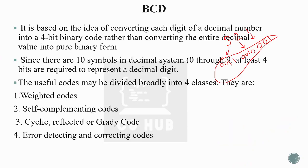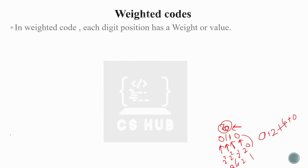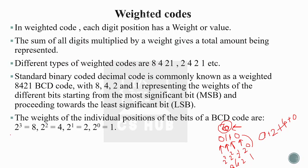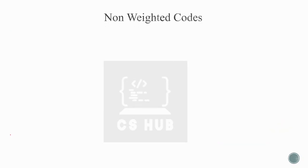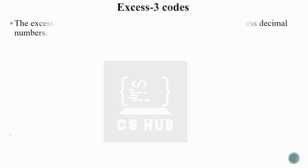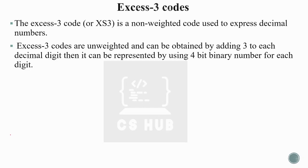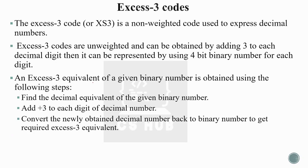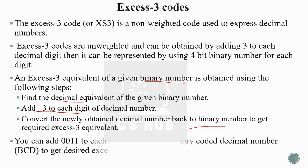To summarize: today we discussed BCD (Binary Coded Decimal), where instead of converting the entire number to binary by repeated division by two, each digit is converted to its four-bit binary equivalent. We covered the four categories of codes — weighted, self-complementing, cyclic, and error-detecting. Weighted codes assign a positional weight to each digit. Non-weighted codes like Excess-3 have no assigned weight; in Excess-3, each decimal digit is added with three and then converted to binary.